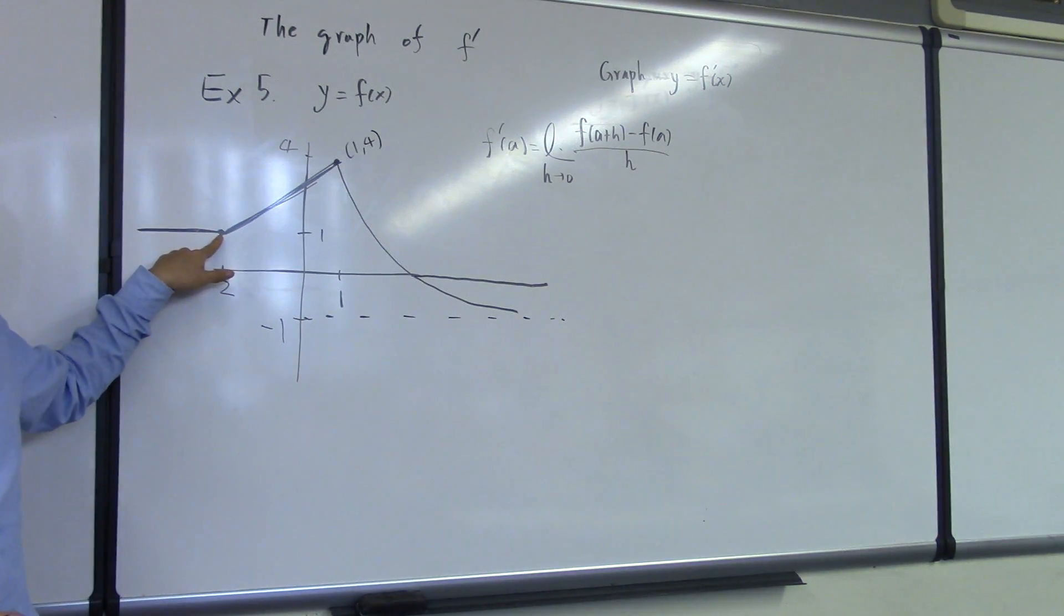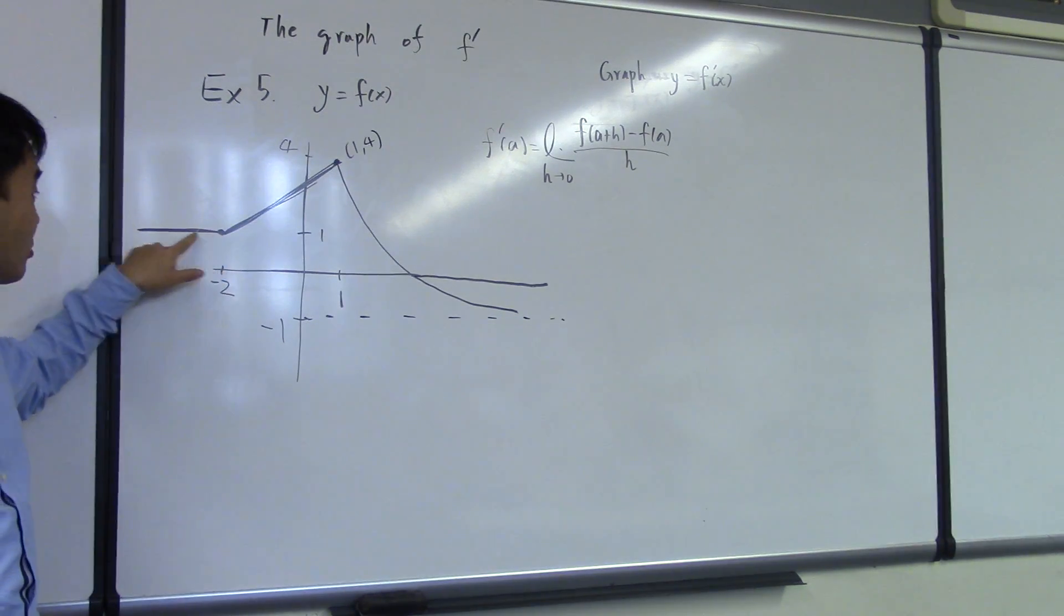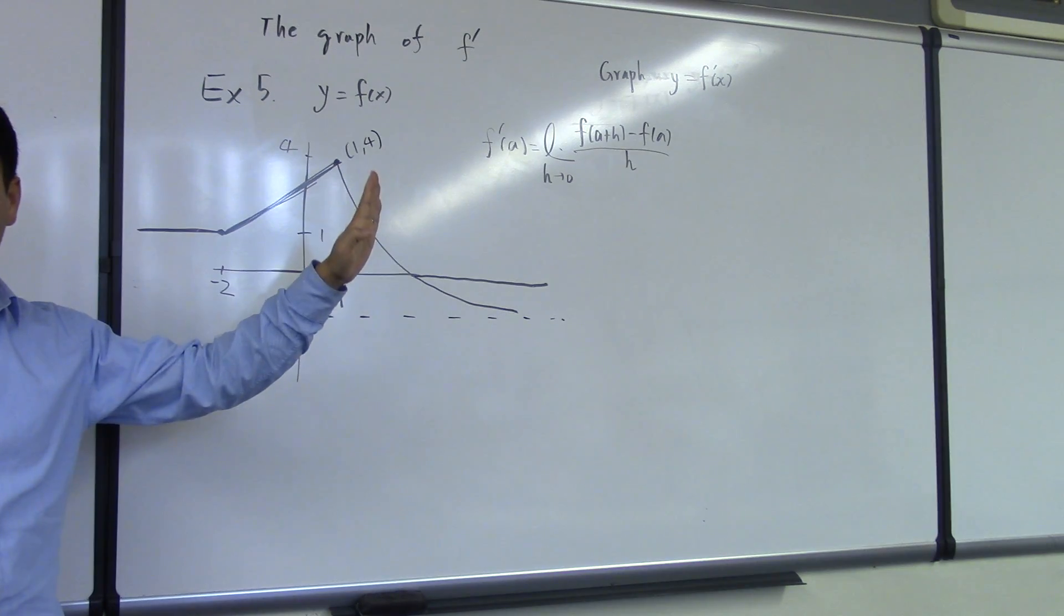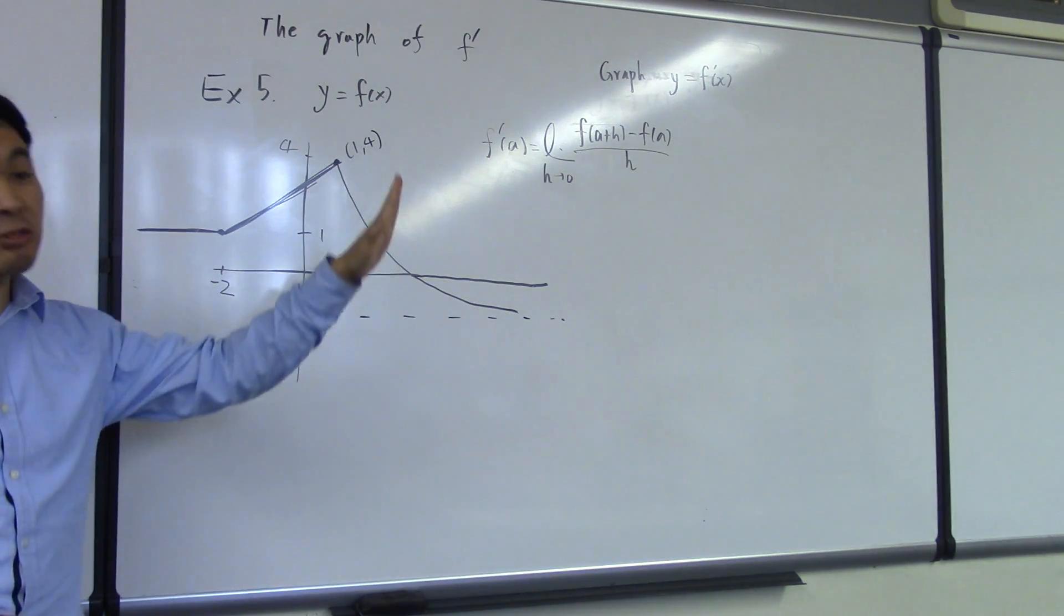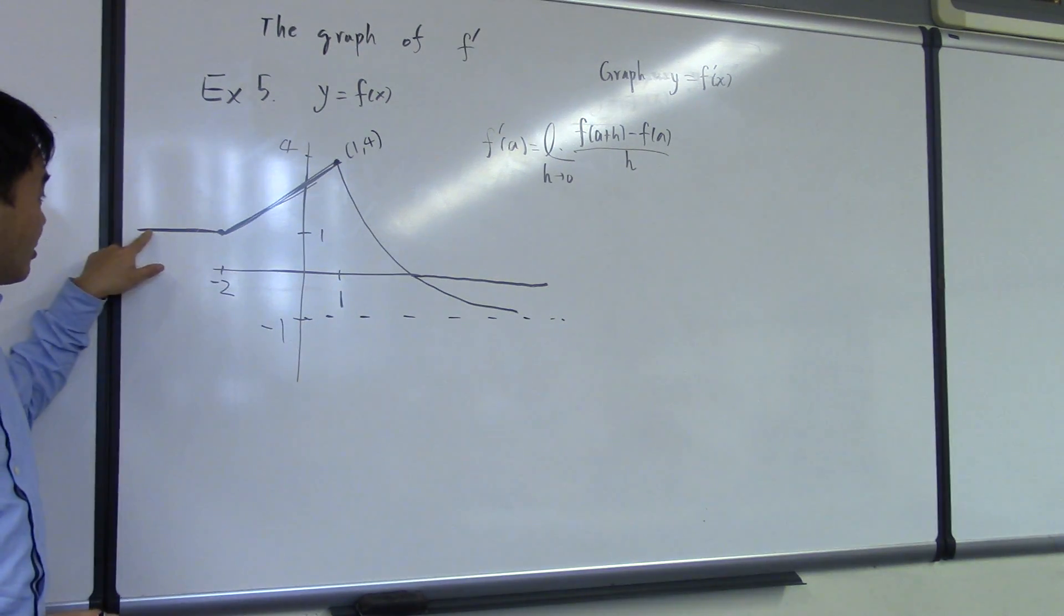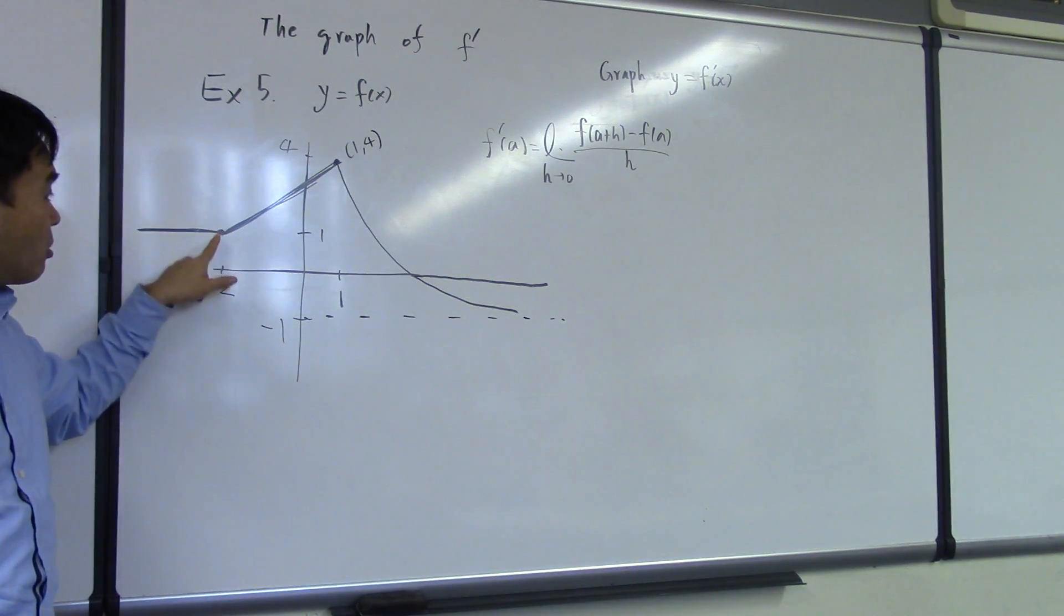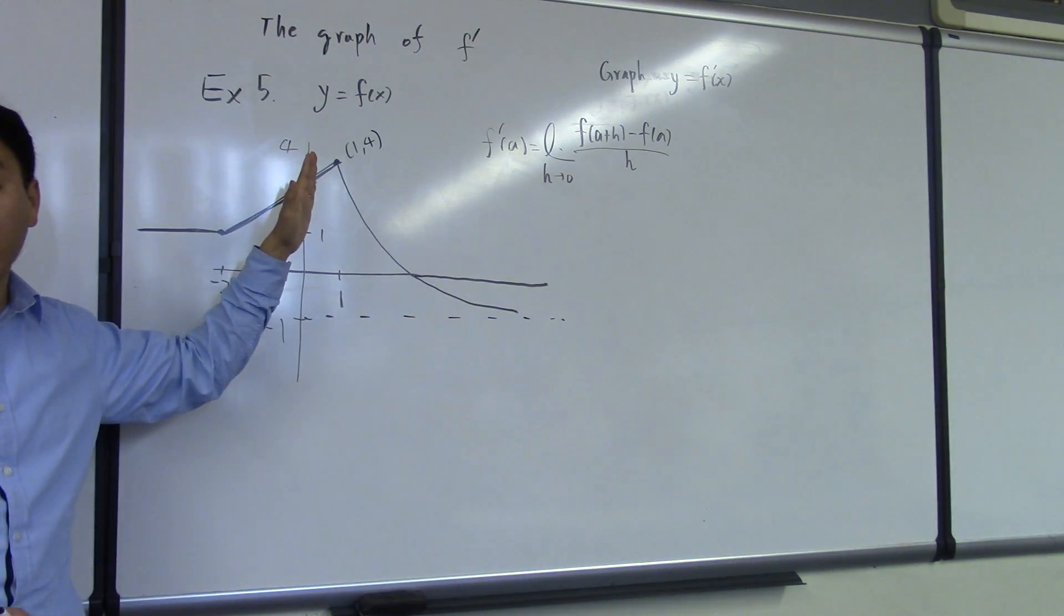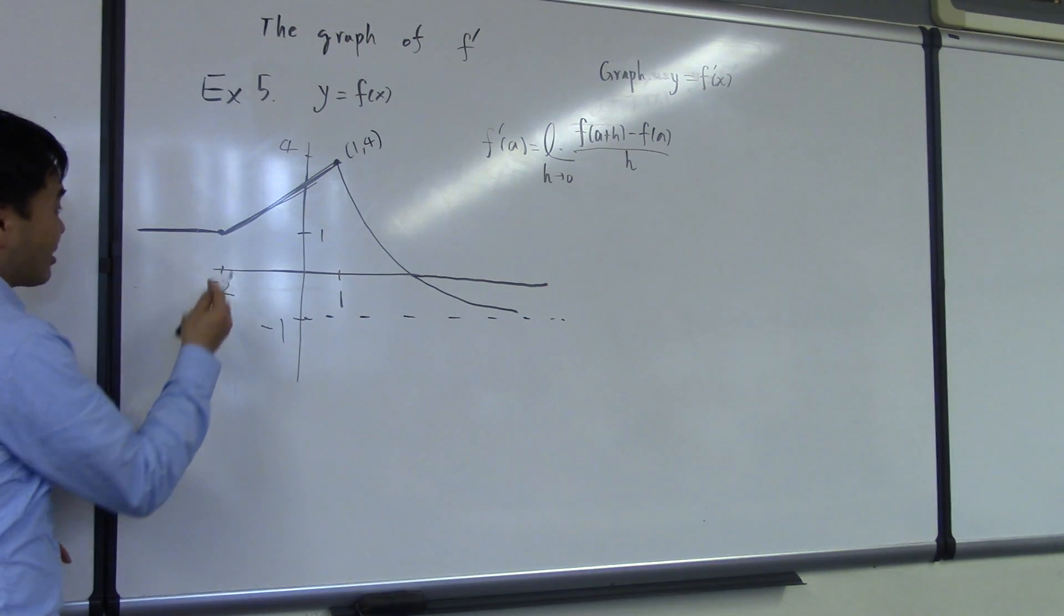So, here is another example. There's a sharp turn, right? It doesn't vary smoothly. Only when the graph is varying smoothly, you can talk about the tangent line at that point. Here, it goes from slope 0 to some positive slope abruptly. In that case, you say that the derivative does not exist here.